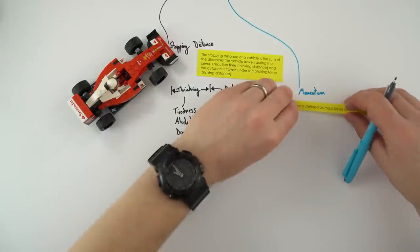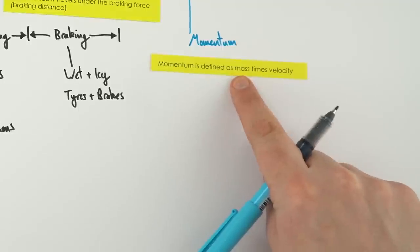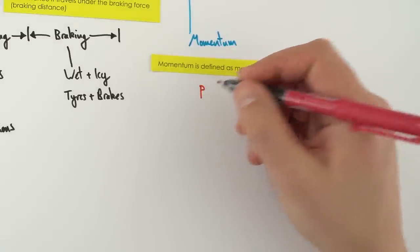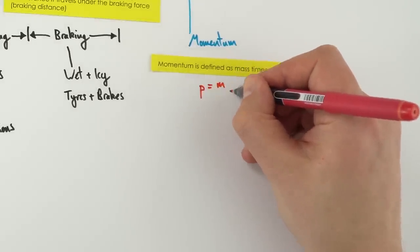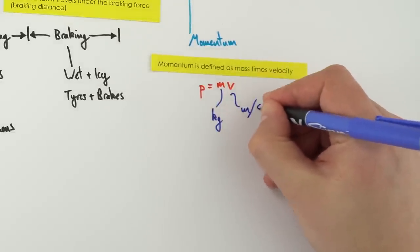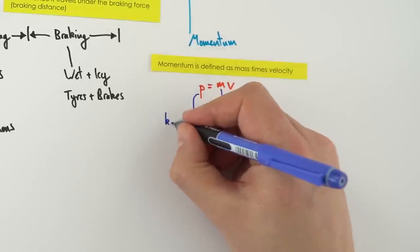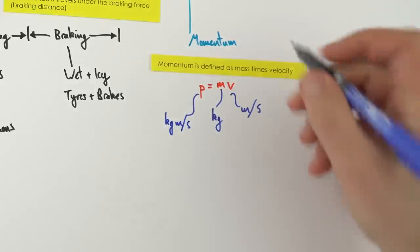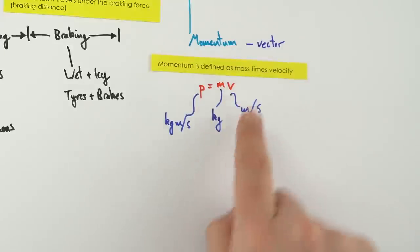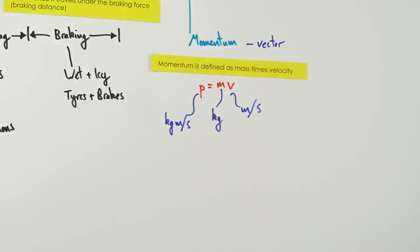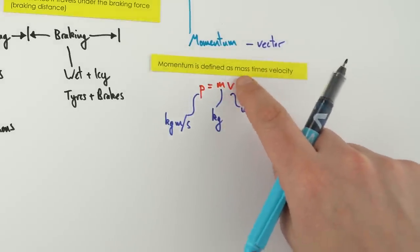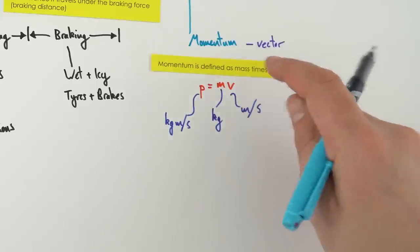Momentum is defined as mass times velocity: p = mv. Confusingly, momentum uses the symbol 'p' from the word impetus. Mass is in kilograms, velocity in metres per second, so momentum is in kilogram metres per second. It's a vector quantity — you can have positive or negative momentum depending on direction. Don't confuse it with kinetic energy, which also depends on mass and velocity but is measured in Joules.